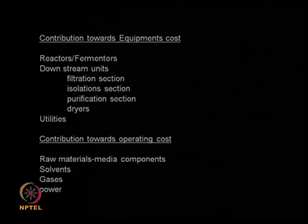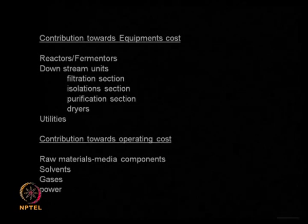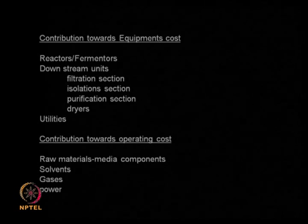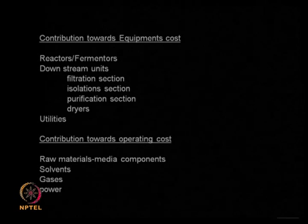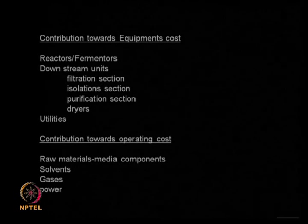If you look at equipment, it is made up of reactors, fermenters, downstream units like filtration, isolation units, purification units, dryers and so on. All of them add to the overall equipment cost. If you look at the operating cost, there are solvents, raw materials, media components, gases, power, and many other utilities which add up to the operating cost. The cost of the final product will depend upon your operating cost and also indirectly depends upon your equipment cost.